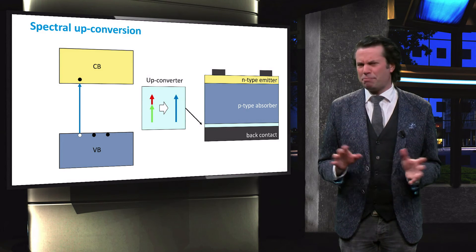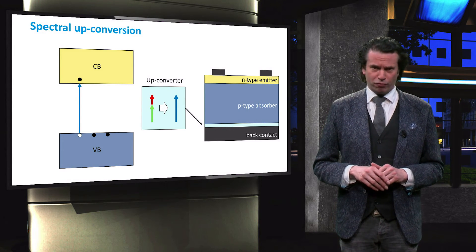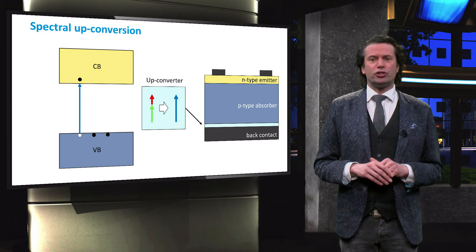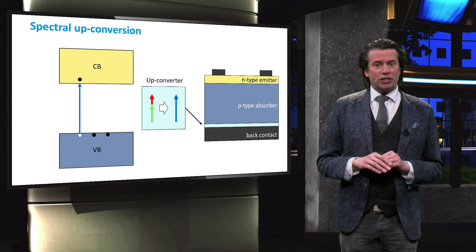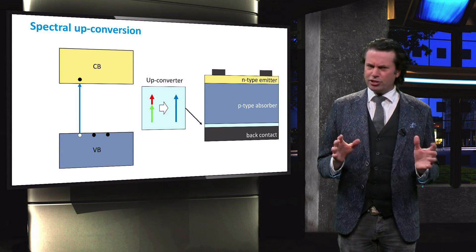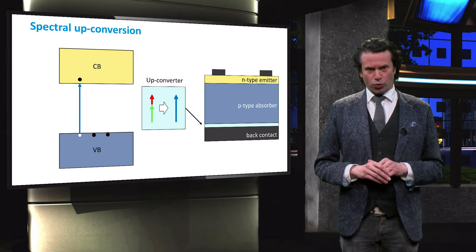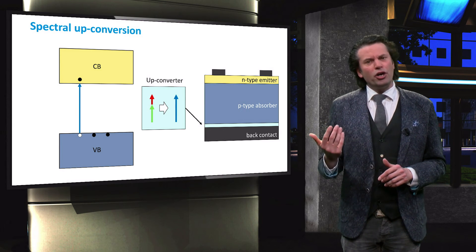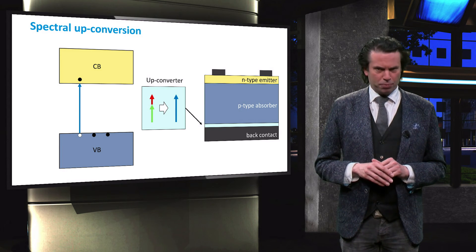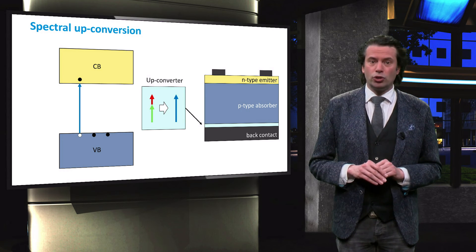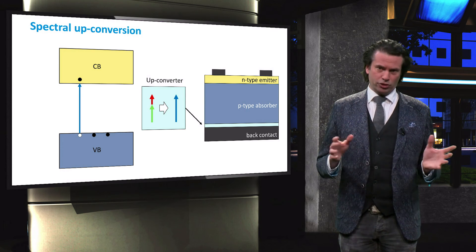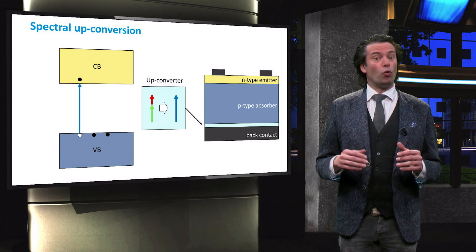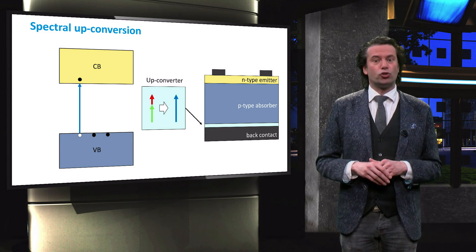Two distinct material systems have been employed to produce photon up-conversion for solar cells. So-called triplet-triplet annihilation up-converters use organic dyes with rationally ordered energy levels. These up-converters operate at shorter wavelengths between about 500 to 800 nm. On the other hand, rare earth up-converters, which make use of atomic transitions within lanthanide ions, work in the region around 1500 nm. Both approaches have already demonstrated an enhancement of the solar cell efficiency.